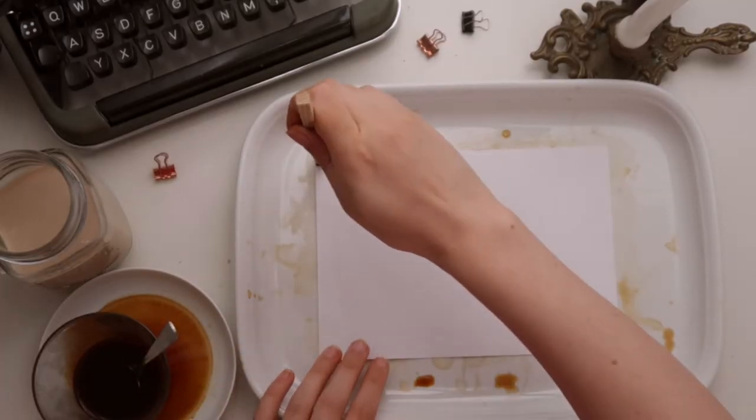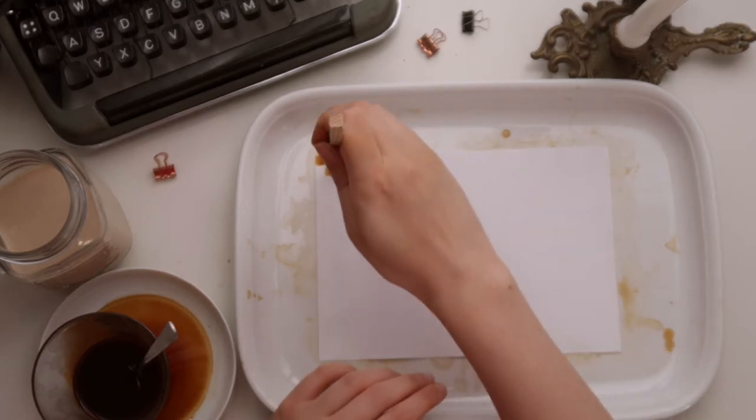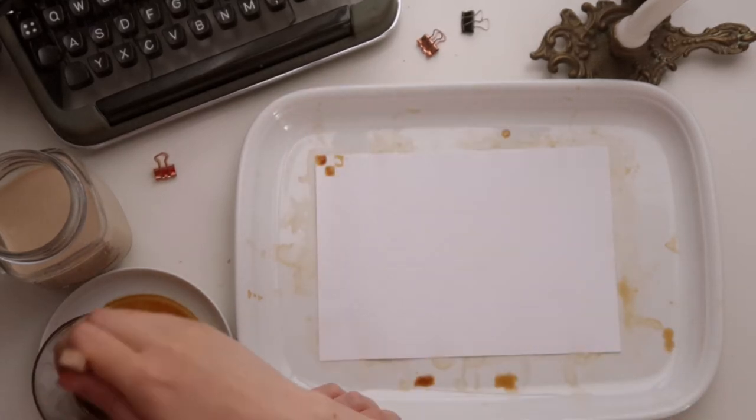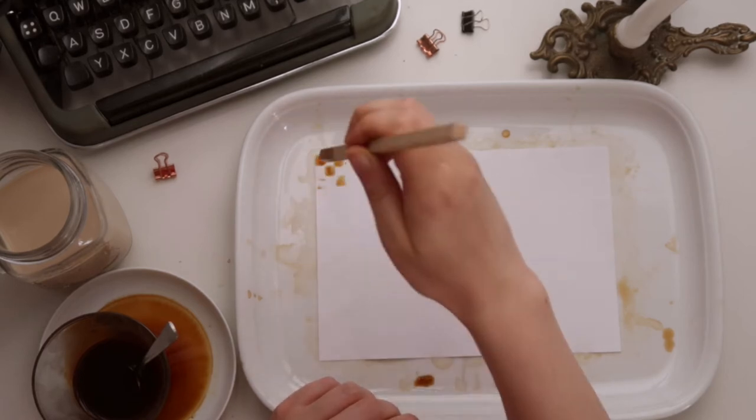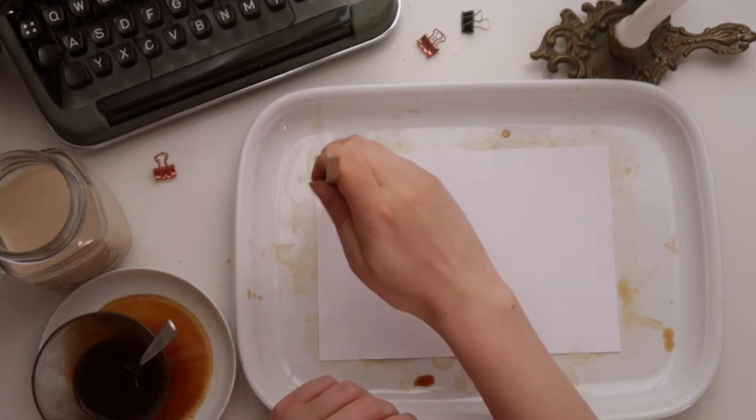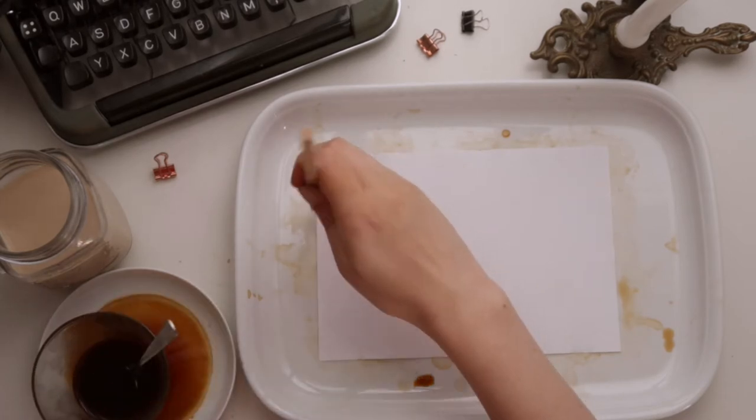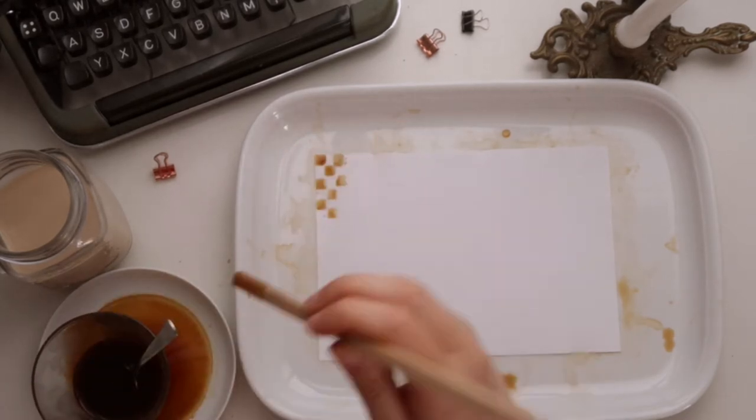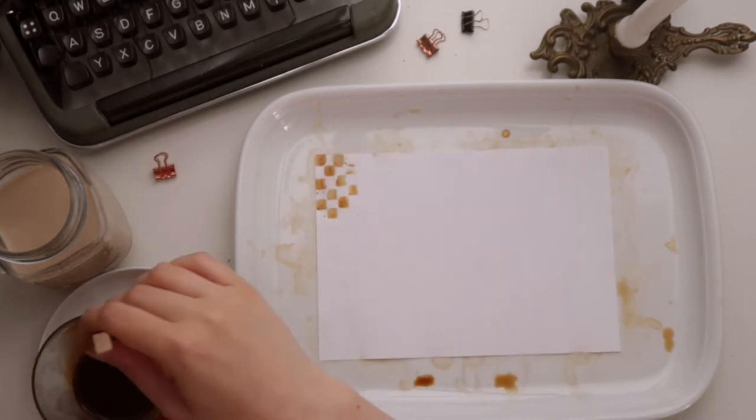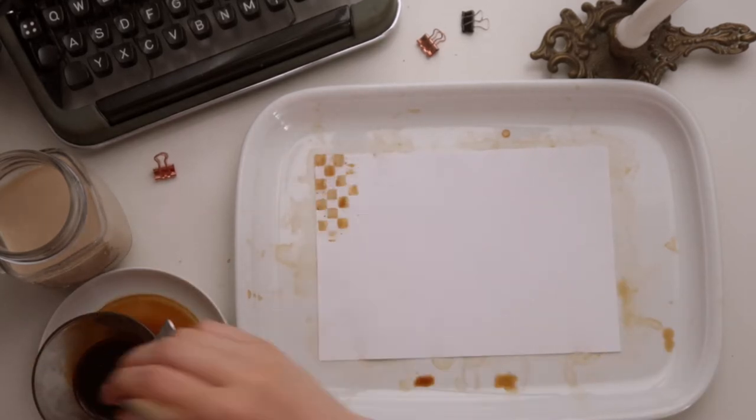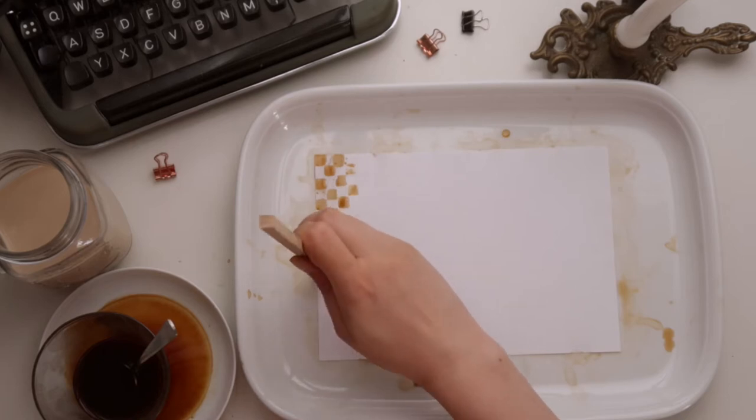Now onto my favorite pattern paper I made in this batch. The checkered one. I did dip a square wooden stick into the coffee and used it as a stamp to create a pattern. This was definitely the most time-consuming pattern I made in this video, but I must say I love the outcome the most.